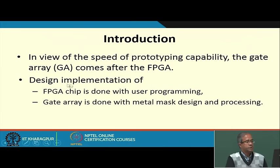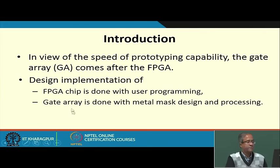The main difference is that to implement a design on hardware for FPGA, you can do it in your lab with user programming - if you have the CAD tool available, you can do it yourself. But gate arrays cannot be done that way; you have to send your request to the fabrication facility. You might ask: why not just design a conventional ASIC chip? We shall see that the total cost becomes much less compared to designing an IC from scratch.